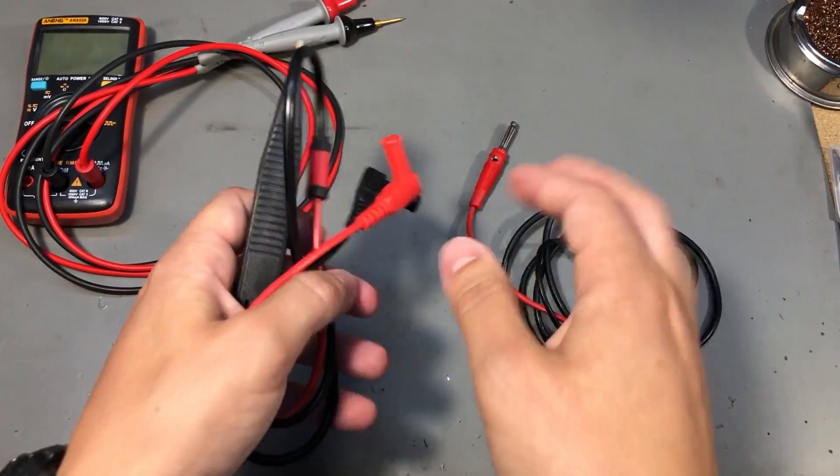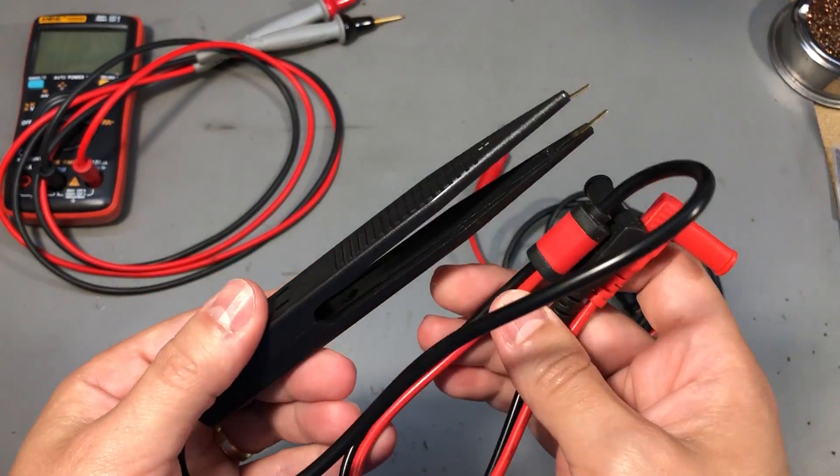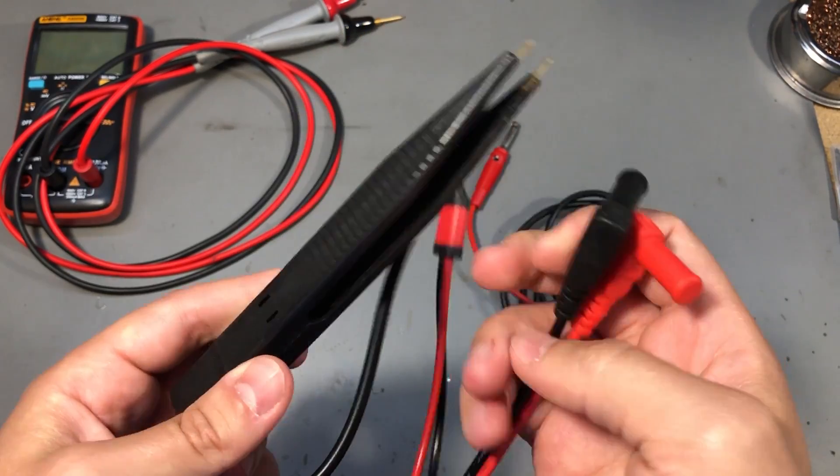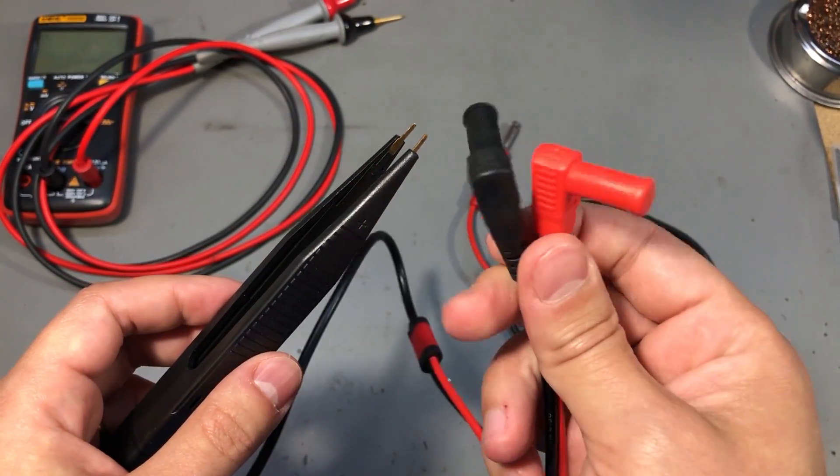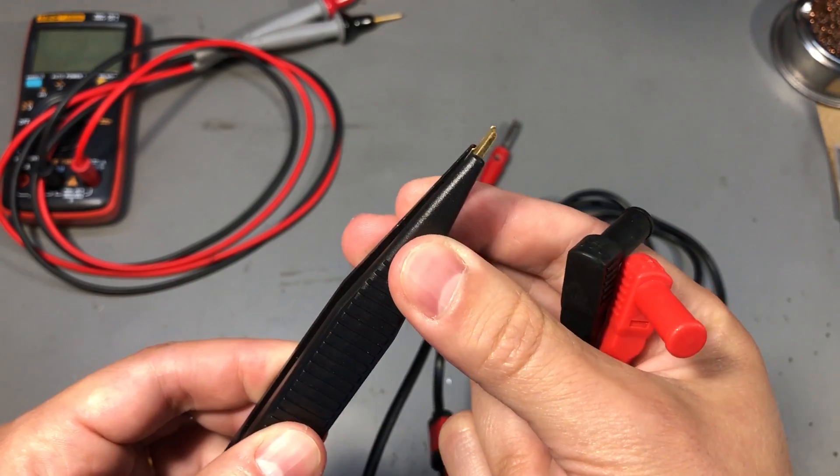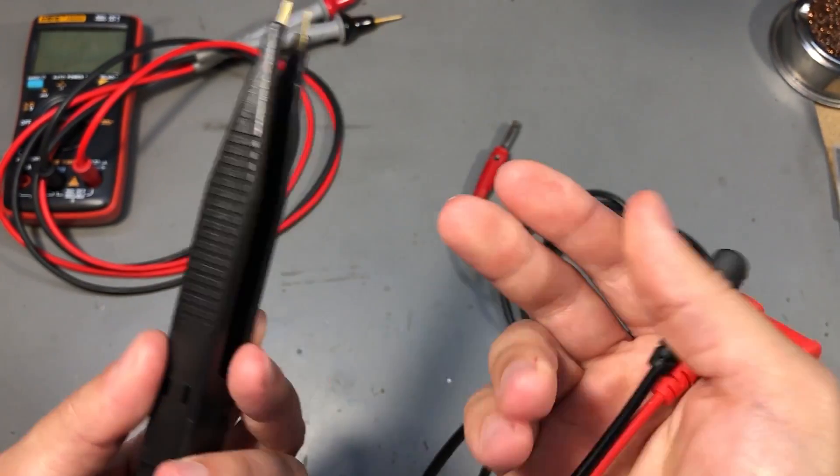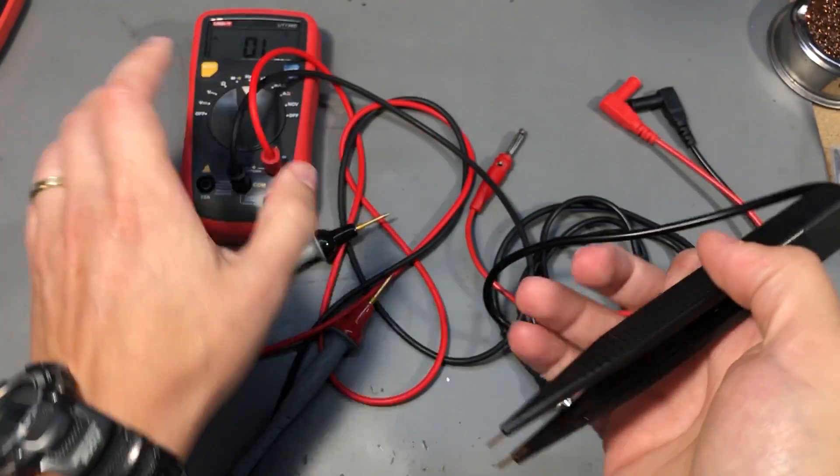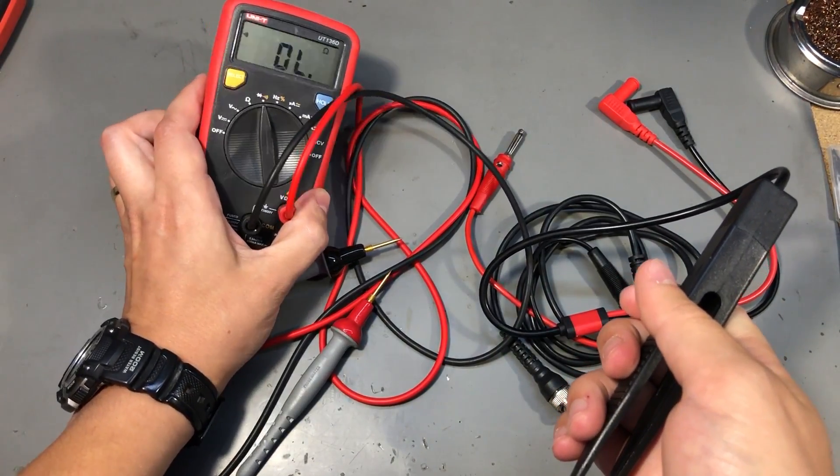I also got myself one of these tweezer type test leads. So you get the banana connectors on one end and these would go into your multimeter and the tweezer type connection at the other end. This is useful for measuring small SMD components and I want to run a test on these using a cheap multimeter on the continuity tester.